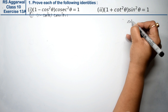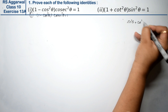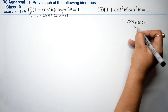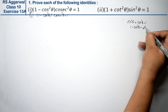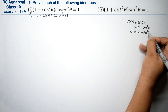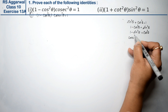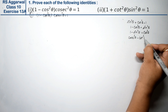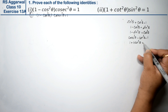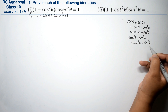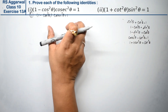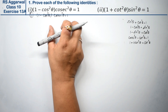I will revise one more time. The identities are: sin squared theta plus cos squared theta equals 1. From this we get: 1 minus cos squared theta equals sin squared theta, or 1 minus sin squared theta equals cos squared theta. Also, sec squared theta minus tan squared theta equals 1, and 1 plus tan squared theta equals sec squared theta. These are our identities.